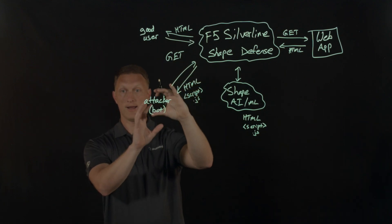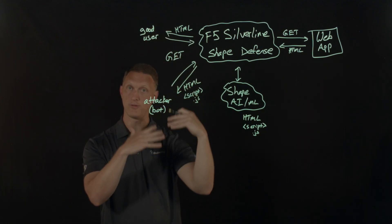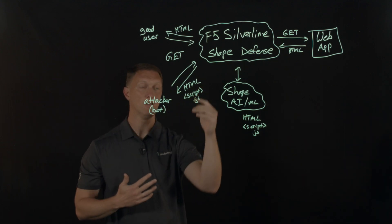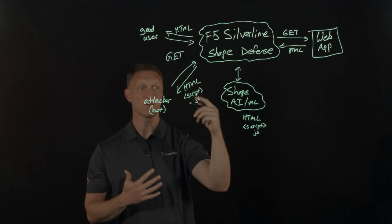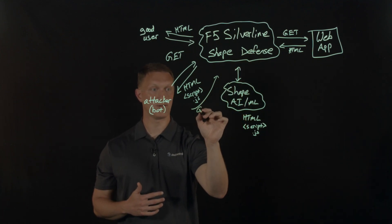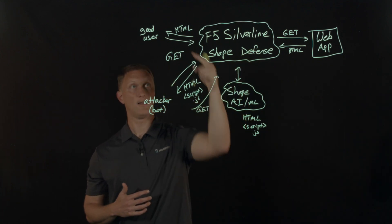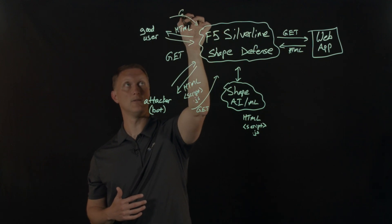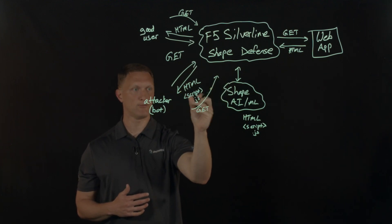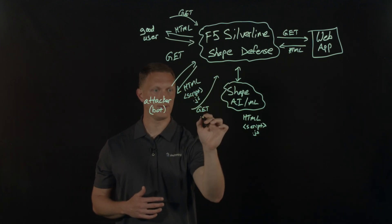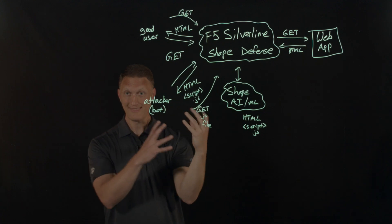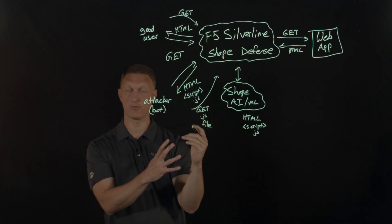When the browser — whether the good user or the attacker — runs through the HTML code and encounters this script tag, it runs that code as well. This is designed to send another GET request back to the Silverline Shape Defense capability to retrieve the actual JavaScript file. When that file is served up, that's where a lot of the magic happens.